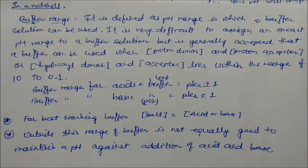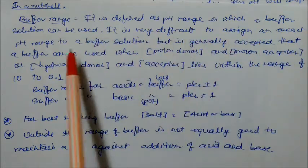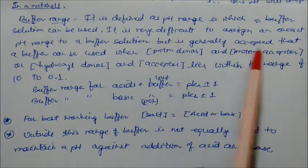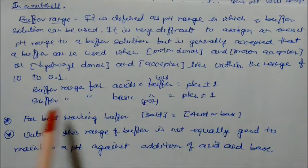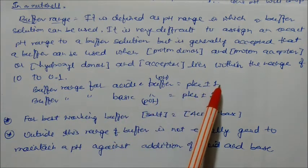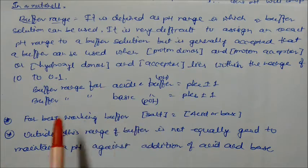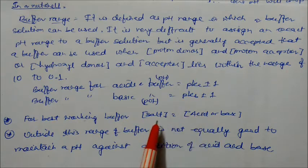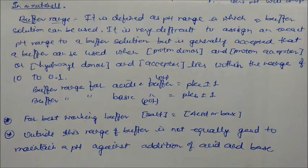In summary, buffer range is defined as the pH range in which a buffer solution can be used. It is generally accepted that a buffer can be used when the ratio of proton donor to proton acceptor lies within 10 to 0.1. For an acidic buffer the range is pKa ± 1; for a basic buffer it is pKb ± 1. Outside this range, the buffer is not effective at maintaining pH against addition of acid or base.